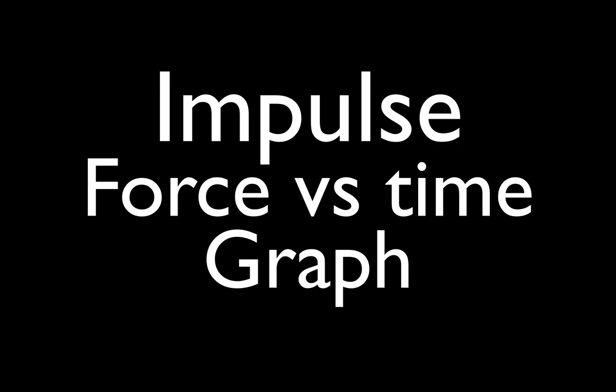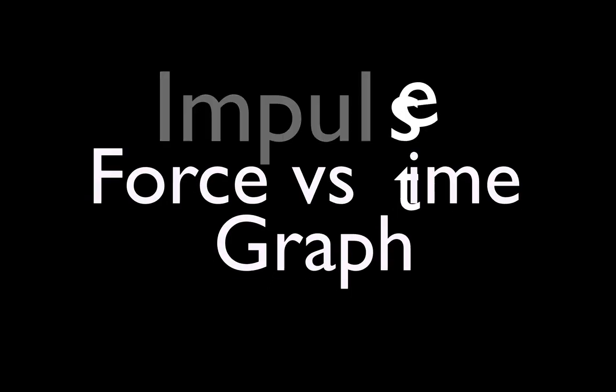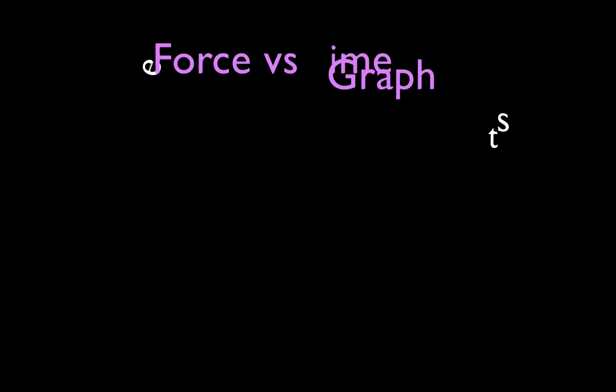In today's video we're going to go over a problem involving impulse and how we can determine the impulse from the force versus time graph. We'll also do that through an example where we determine the change in momentum and the change in the velocity of an object.